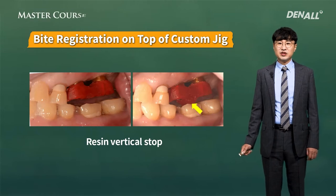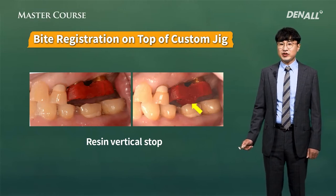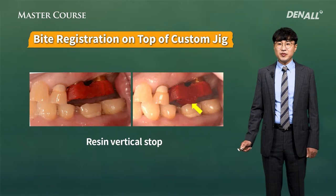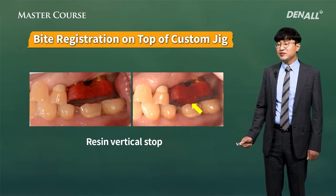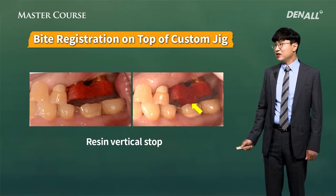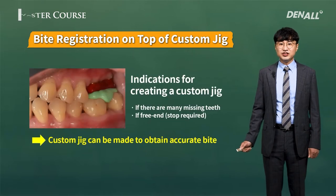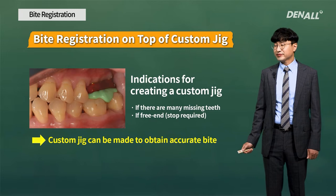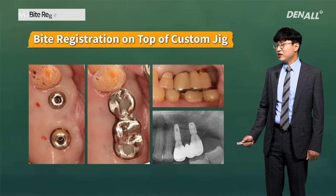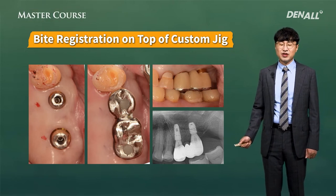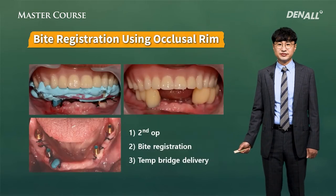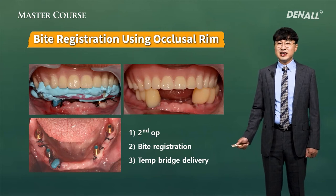Using a custom jig to take jaw relationship: if you have a vertical stub, it makes jaw relationship registration easier. You drill resin to create a transfer jig, then make a vertical stub and take the bite — then you can obtain more stable results. On top of the custom jig, silicone bite registration was done again. The final prosthesis was completed and bite control was required only minimally. So when metal meets, if you have to do a lot of bite control, it becomes very tricky. It's very important that you have accurate bite registration.